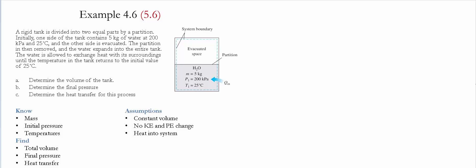A rigid tank is divided into two equal parts by a partition. Initially one side of the tank contains 5 kilograms of water at 200 kilopascals and 25 Celsius, while the other one is evacuated. The partition is then removed and the water expands into the entire tank. The water is allowed to exchange heat with the surroundings until the temperature of the tank returns to an initial value of 25 Celsius.